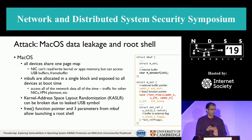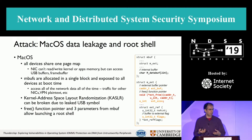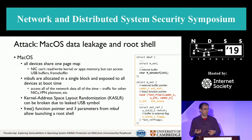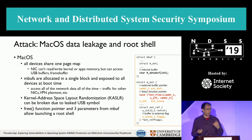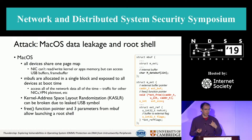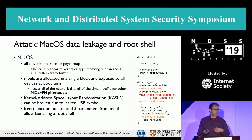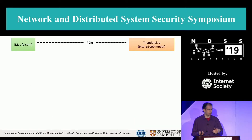Let's try to run a root shell. First, we need to break kernel address-space layout randomization, which we can do from a symbol leaked from the USB stack. In the mbuf there is a free function pointer plus the parameters to the free function, and all these are exposed to the device.